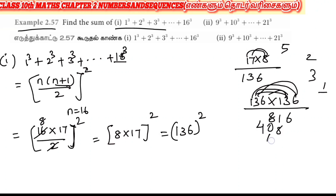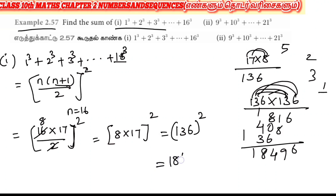Then 1 six is 6, 1 three is 3, 1 one is 1. Adding all columns: 6; 8 plus 1 is 9; 8 plus 6 is 14, carry 1; 4 plus 1 is 5; 5 plus 3 is 8. So the answer is 18,496. The sum of cubes from 1 to 16 is 18,496.